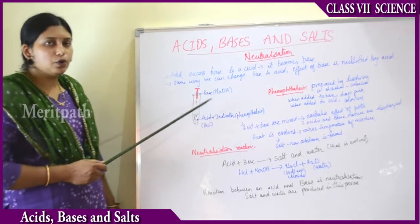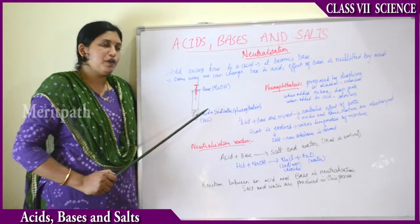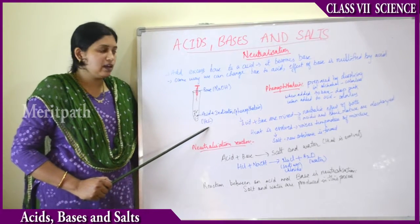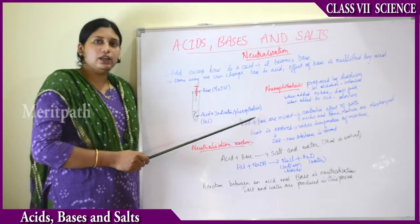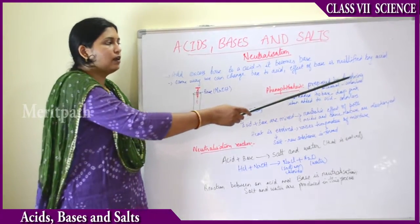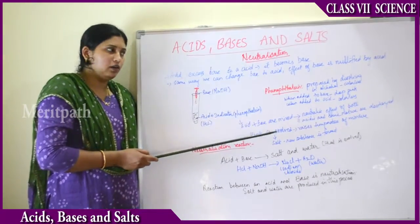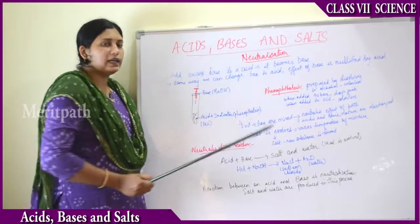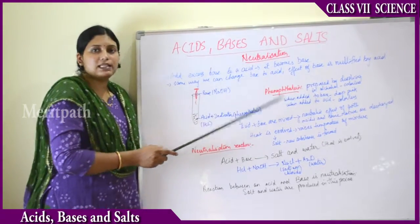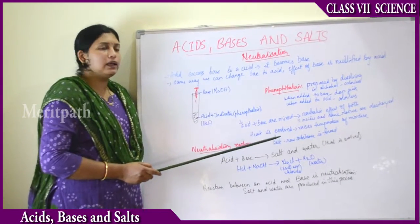To prove this, we take a test tube and add a solution of hydrochloric acid with phenolphthalein indicator. Phenolphthalein is an indicator prepared by dissolving in alcohol. Its usual color is colorless, but when base is added to phenolphthalein, it turns deep pink.